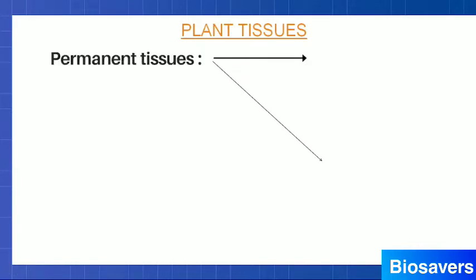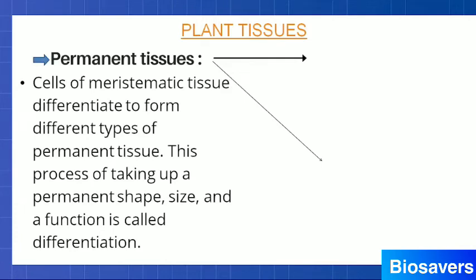Permanent tissue refers to tissues which have lost their capacity of dividing. Meristematic tissue cells keep dividing, but at a certain point their dividing process stops. When the cells of meristematic tissue differentiate and stop dividing further, those tissues are known as permanent tissue. So permanent tissues are formed from meristematic tissues only — cells that were previously in meristematic tissue later become permanent because they lose their capacity of dividing further. This process of converting meristematic tissue into permanent tissue is known as differentiation — the process of taking up a permanent shape, size, and function.